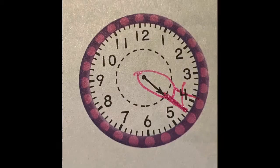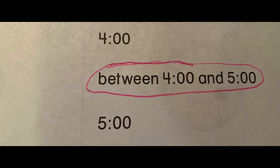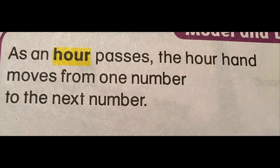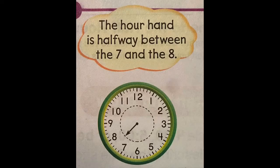What about this one? Let's find our hour hand — there it is. But where is it pointing? It's in between two numbers. It's not quite on the four and not quite on the five. It's between four o'clock and five o'clock. As an hour passes, the hour hand moves from one number to the next number.